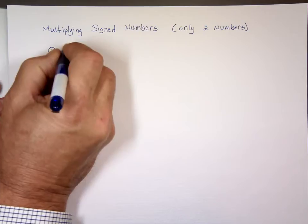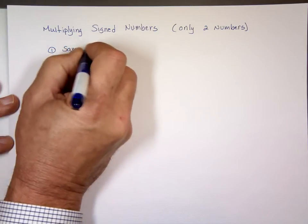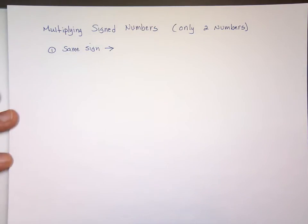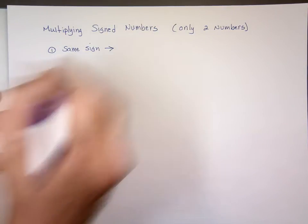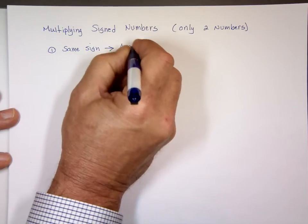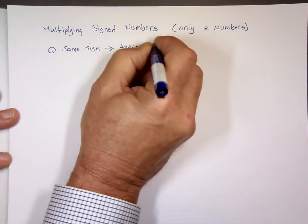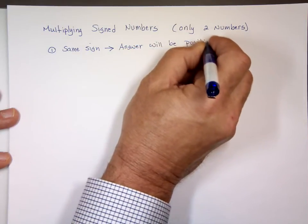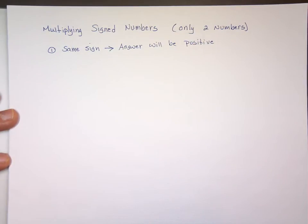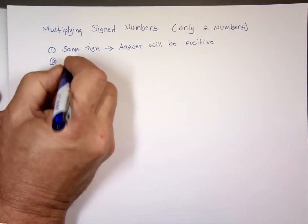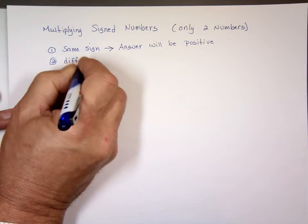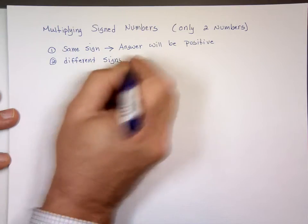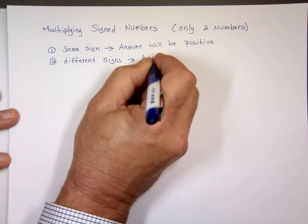If the two numbers have the same sign, the answer will be positive. We don't care which one is bigger or smaller. If the numbers have different signs, the answer will be negative. That's it.